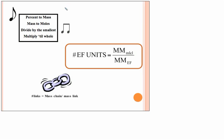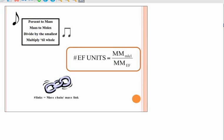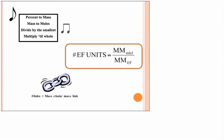Now, at the pre-AP level, this is what we learned. We learned this little phrase, it's a little bit sing-songy. You could hear it percent to mass, mass to moles, divide by the smallest, multiply till whole. And I used to have my class say it together many, many times. And those are the steps. If you memorize that kind of little poem, you will have your steps to doing an empirical formula.